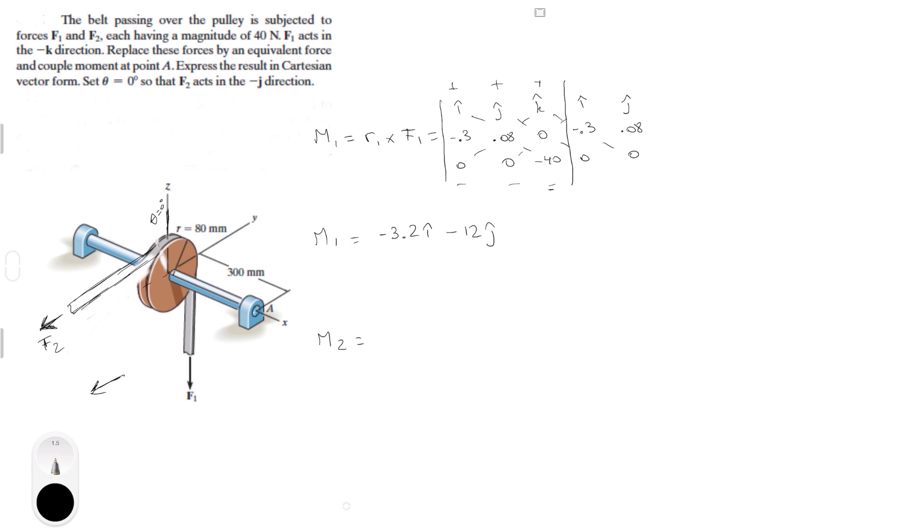And M2 is equal to R2 cross F2. I'm going to go a little faster for this one guys because you know how to do matrices. I just showed you an example. Minus 0.3, 0.08, 0, minus 40 and 0. So positive diagonals, negative diagonals, this should look something like 12k plus 3.2 in the i.